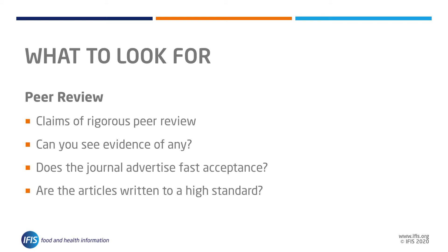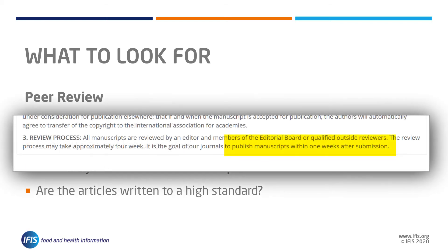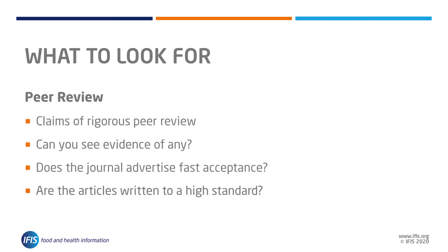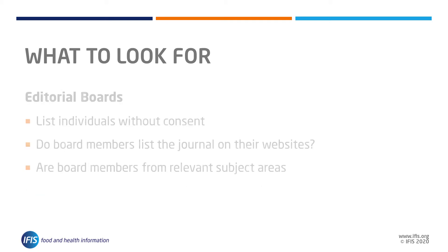Alternatively, journals will advertise their fast acceptance times — from as low as three days — as a benefit to authors. Is there a submission and acceptance date on published papers that you can see? Are they very fast? Read some of the articles: are they written to a good standard that appears to have been peer reviewed and received feedback?